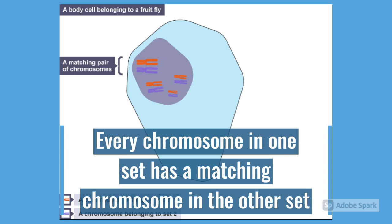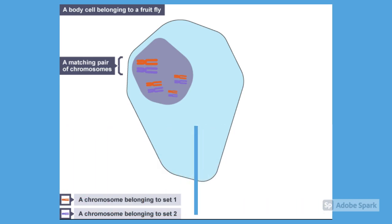In our bodies, we have a lot more chromosomes. Each set has 23 chromosomes, which makes 46 in total. And every chromosome has a matching chromosome on the other set.